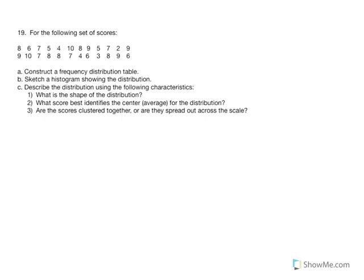Number 19. We're given data and asked to construct a frequency distribution table, a histogram, describe the shape and center, and determine if scores are clustered together or spread out. We begin with our frequency table, identifying x values and frequency. We count 24 scores total, so n equals 24. Our high score is 10 and our lowest score is 2.